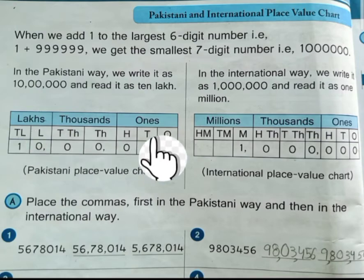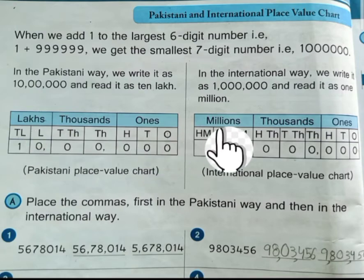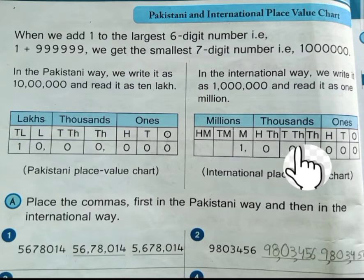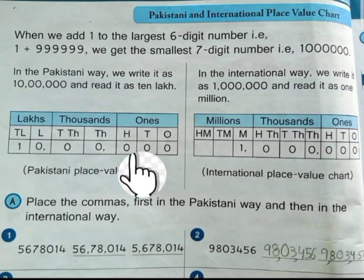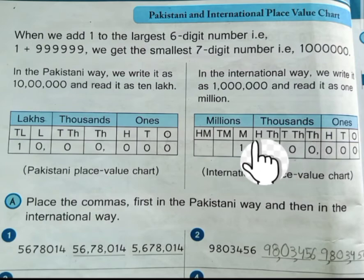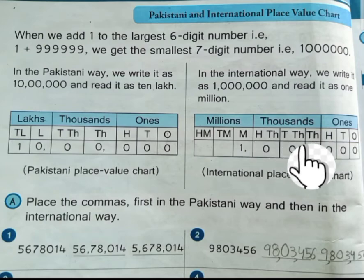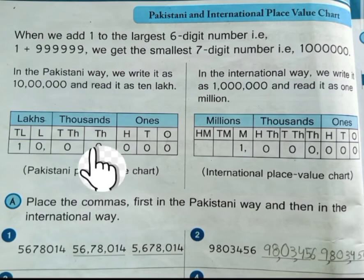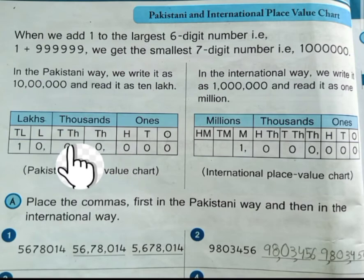But in the international way, the 3rd period is millions. One more difference to learn is that we have 3 digits in the 1000s period in the international way, but we have only 2 digits in the 1000s period of the Pakistani way.